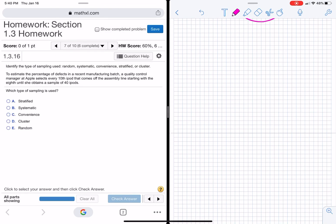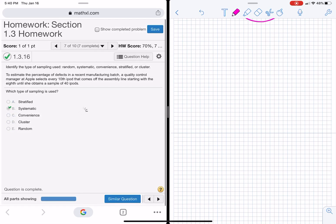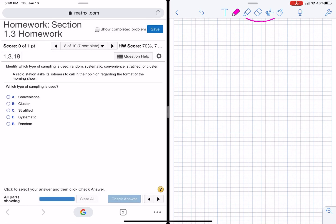Okay. To estimate the percentage of defects in manufactured by expression, every 10th, systematic. Okay. Ask this listeners to call in their station regarding the format of the show. So if some, they just did that because it was convenient to them.